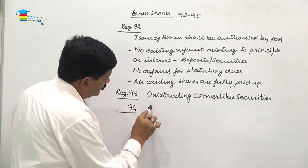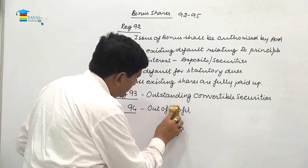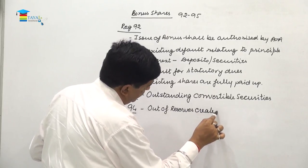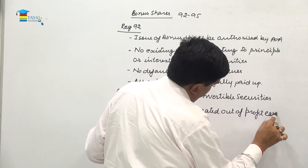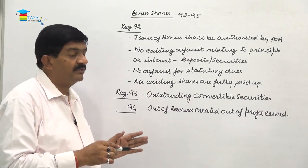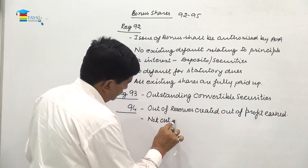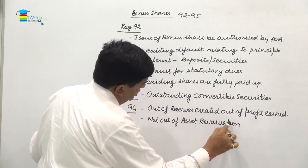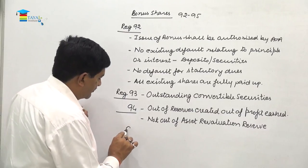Regulation number 94 says bonus shares should be issued out of reserves created out of profit actually earned. In other words, bonus shares cannot be issued out of asset revaluation reserves.